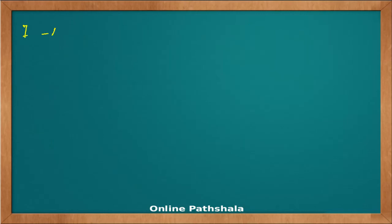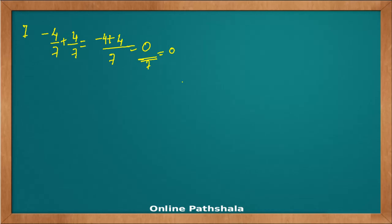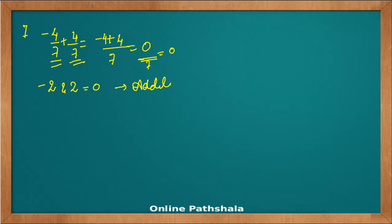Let's take one more example: minus 4 by 7 plus 4 by 7. The answer would be minus 4 plus 4 by 7, which is 0 by 7, or simply 0. The reason for this example is to show the concept of additive inverse. Just as with integers, where minus 2 plus 2 equals 0 — we call them additive inverses — the same rule applies here: minus 4 by 7 and 4 by 7 are additive inverses of each other as rational numbers.